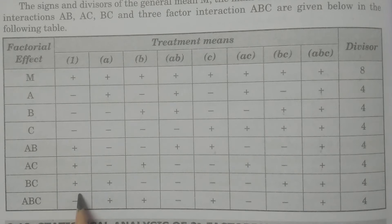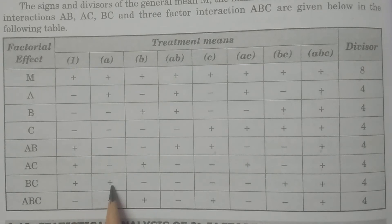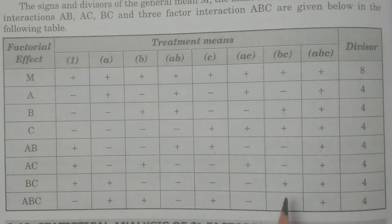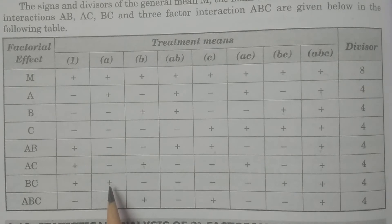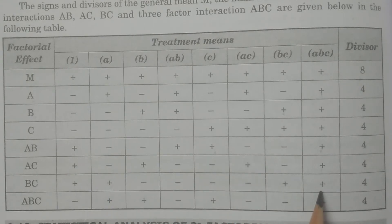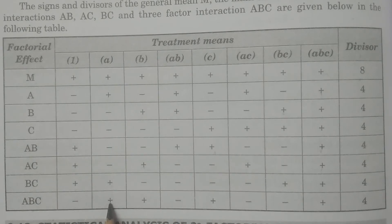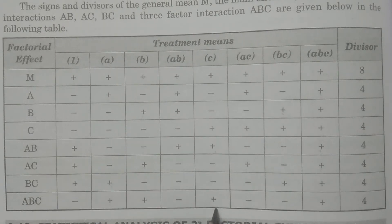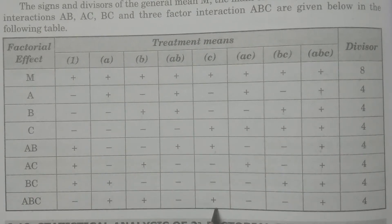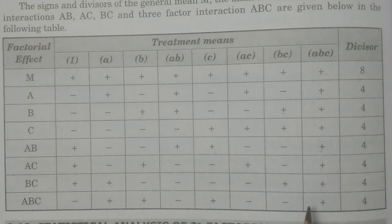For interaction BC: 1 is plus, A is plus, BC is plus, and ABC is plus — having positive signs. For ABC interaction: A, B, C, and ABC are having the positive sign; the remaining — 1, AB, AC, BC — are negative signs. Divisor is 4.